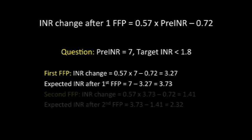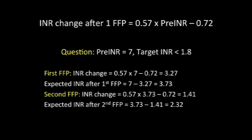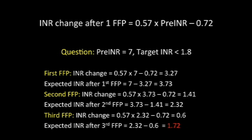Using the same formula for the second time, INR change after the second FFP would be 1.41. So, the expected INR after the second FFP is 3.73 minus 1.41, or 2.32. This is also the INR before the third FFP. Using the same formula for a third time, INR change after the third FFP would be 0.6. So, the expected INR after the third FFP is 2.32 minus 0.6, or 1.72, which is our target.